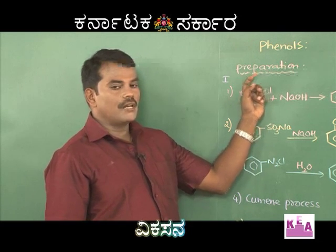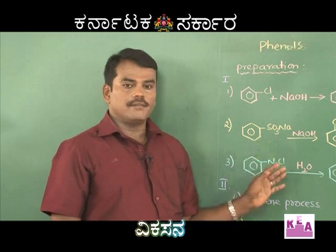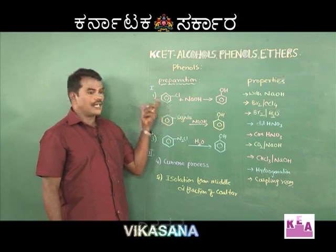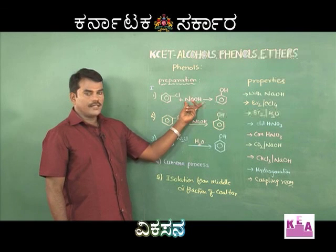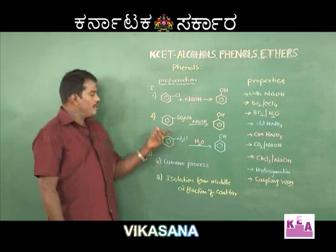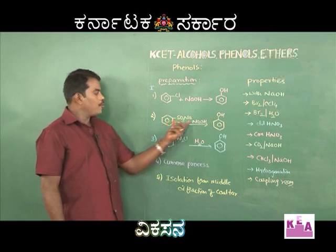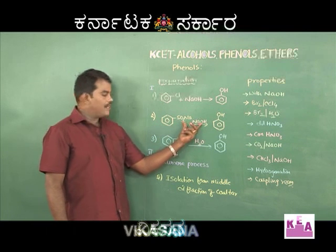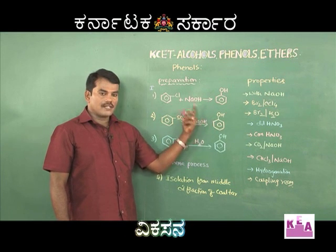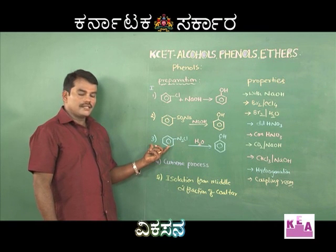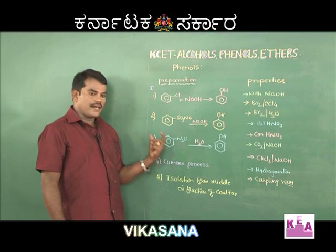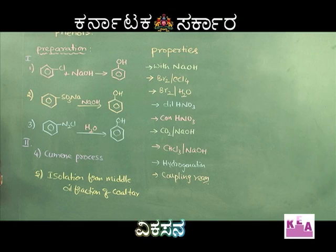Let us talk about general methods of preparation of phenols. Phenol is prepared from halobenzene, like chlorobenzene, by boiling with NaOH under pressure at a temperature of almost 300°C. The second method is by fusing sodium benzene sulfonate with NaOH — you will get sodium phenate, which upon acidification gives phenol.